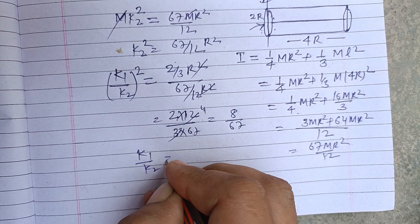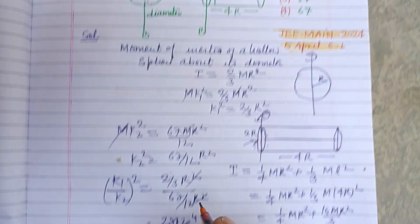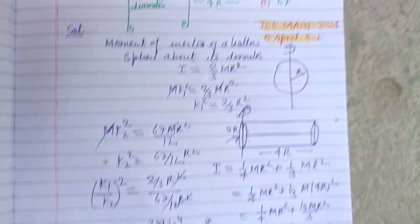So k₁/k₂ equals √(8/67), and it is given in the question as √(8/X).